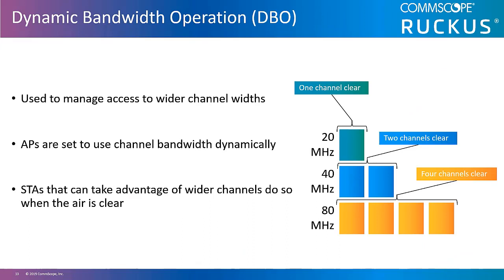Dynamic Bandwidth Operation is defined in the 802.11h standard as a feature of a Very High Throughput station in which the RTS/CTS exchange using non-HT duplicate PLCP data units negotiates a potentially reduced channel width compared to the channel width indicated by the RTS for subsequent transmissions within the current transmission opportunity. More simply put, a 20 megahertz channel width is used so that all PHYs understand the transmission. 802.11a can only use a single 20 megahertz wide channel, 802.11n can go up to 40 megahertz, while 802.11ac and ax can go as wide as 160 megahertz.